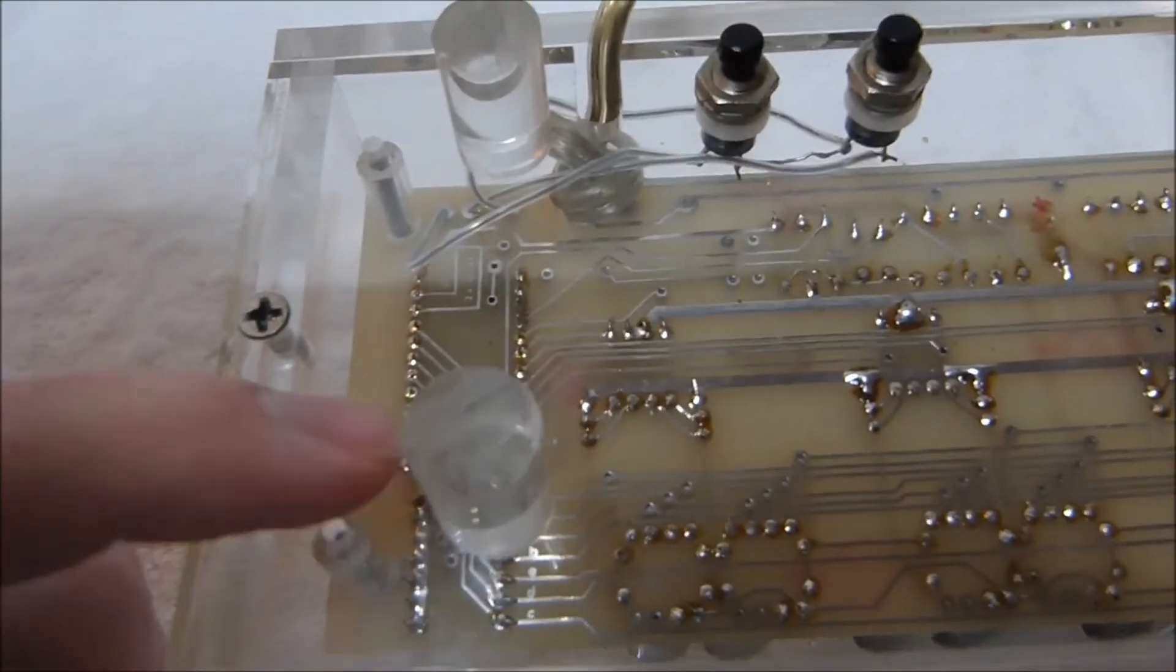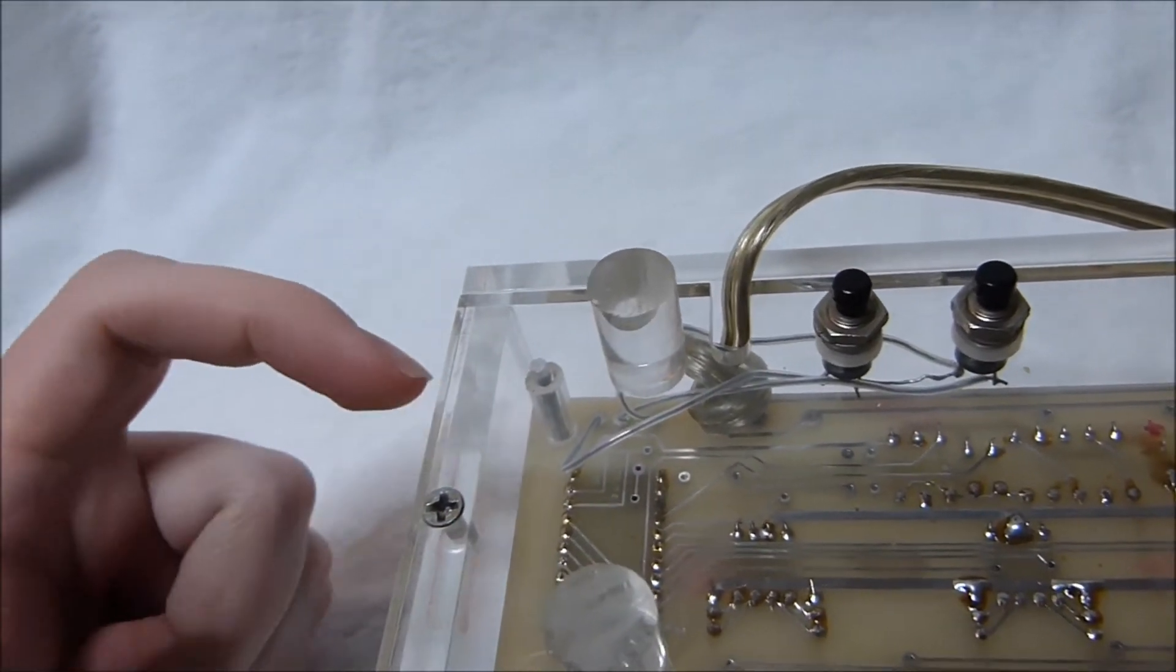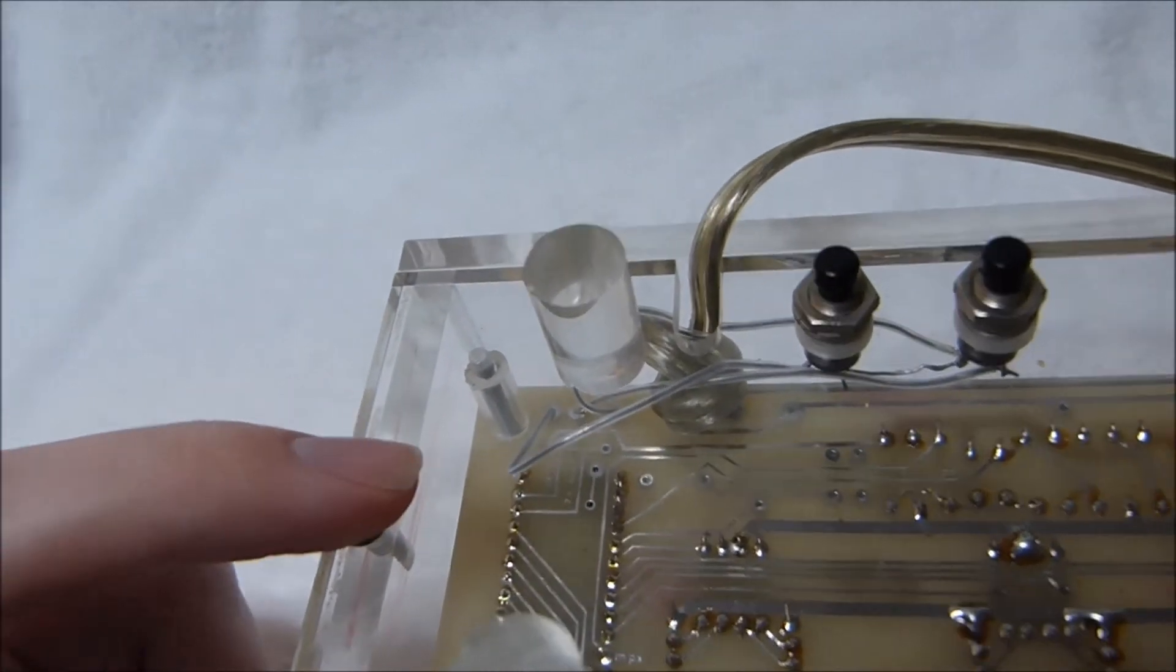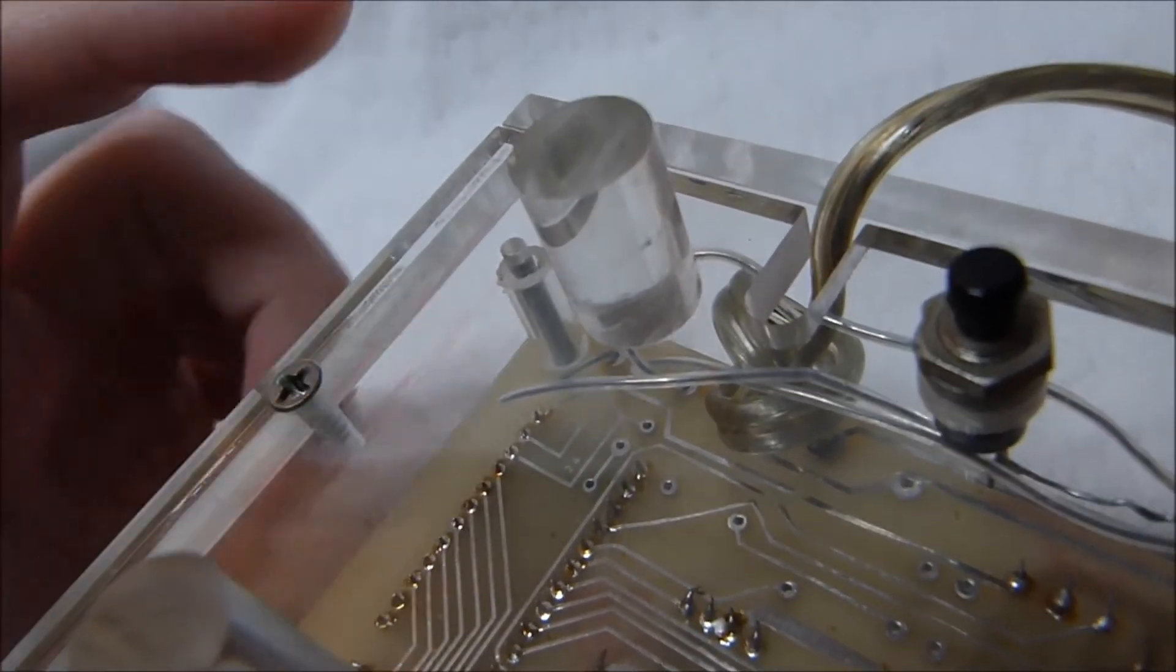On the underside there's a few additional markings, just kind of showing you where things are on the clock chip, especially optional things. You can see it says 50 Hz and 24 hour there.